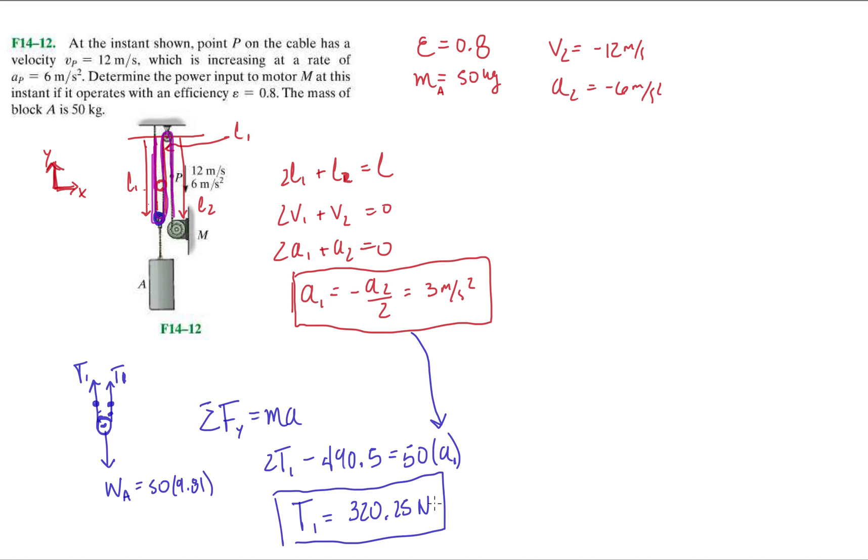What can we do with this? We can get the power, the input power, or sorry, the output power, because we're trying to solve for the inputs. We know that the power output of this is going to be the force that motor is exerting, so that motor is causing a force of 320.25 times the velocity at point P, which is 12.